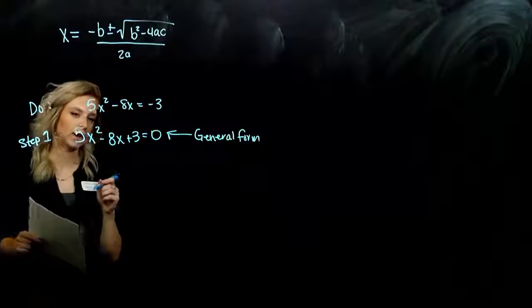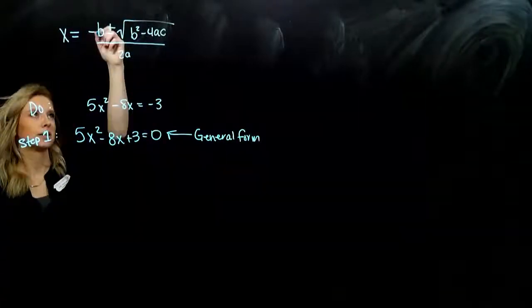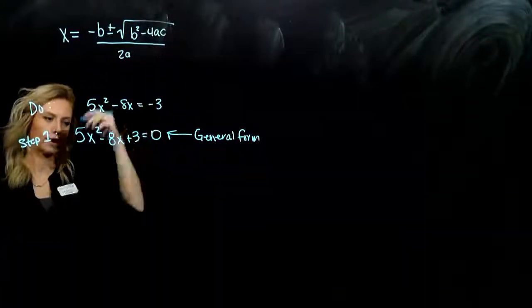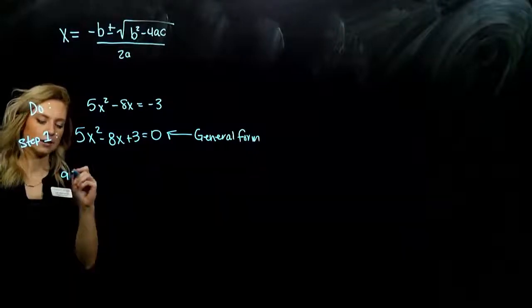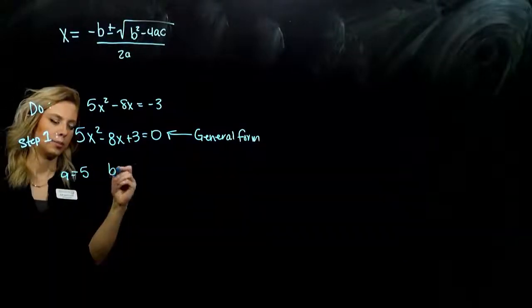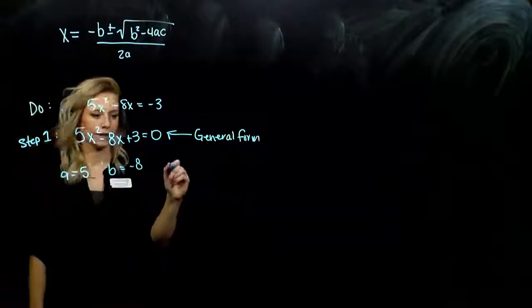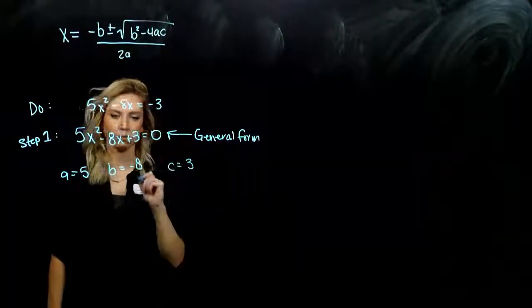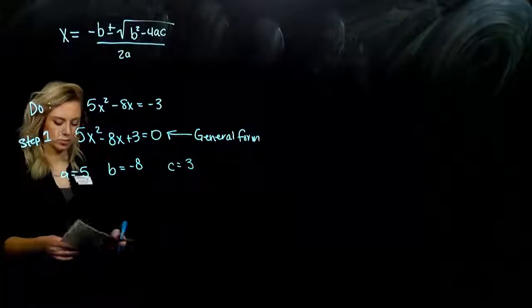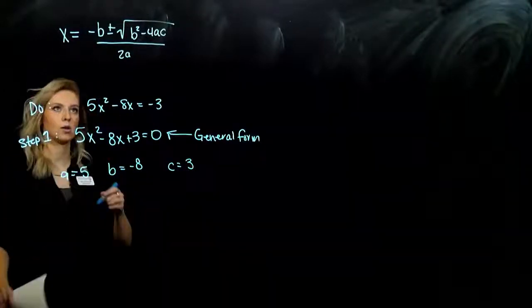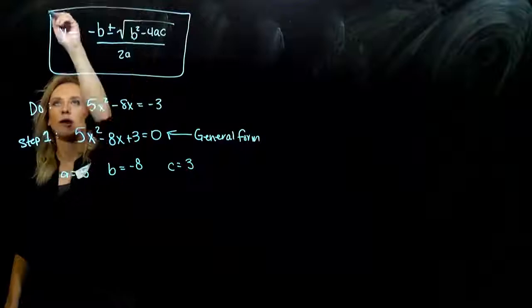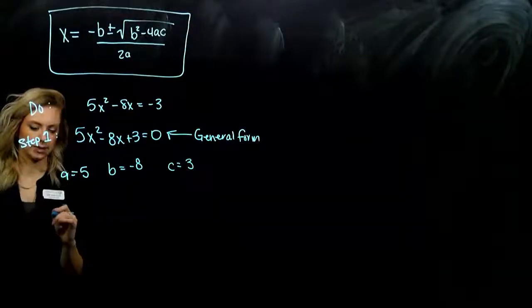Once we have that now, we can plug off the a, b, and c value. Because that's all that we need in our quadratic formula. So a in this case is five. B is negative eight. The sign always goes with the term. And c is positive three. Once we have those, we're literally just plugging it into the quadratic formula and evaluating out. So let's start.